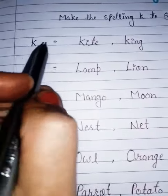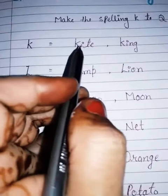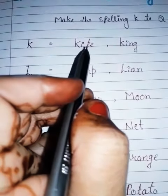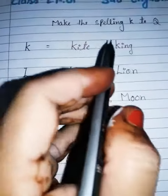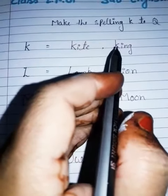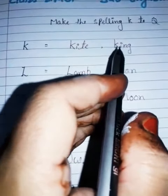K. K for kite, K-I-T-E, kite. K. K for king, K-I-N-G, king.